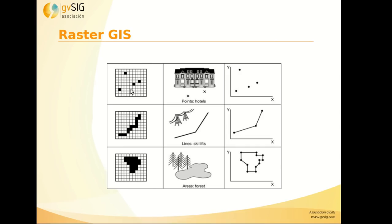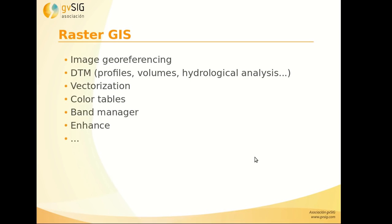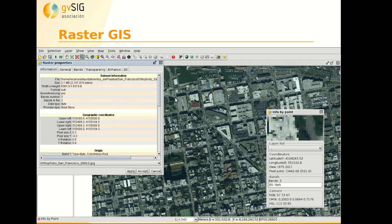Here we can see an example comparing raster and vector representations. In the raster file we have cells and pixels; in the vector file we have points with coordinates, lines represented as pixels in raster, and polygons. For raster images we can georeference them, create digital models, calculate different parameters, vectorize, apply color tables, etc. Here we can also see an orthophoto and the information of the pixels.